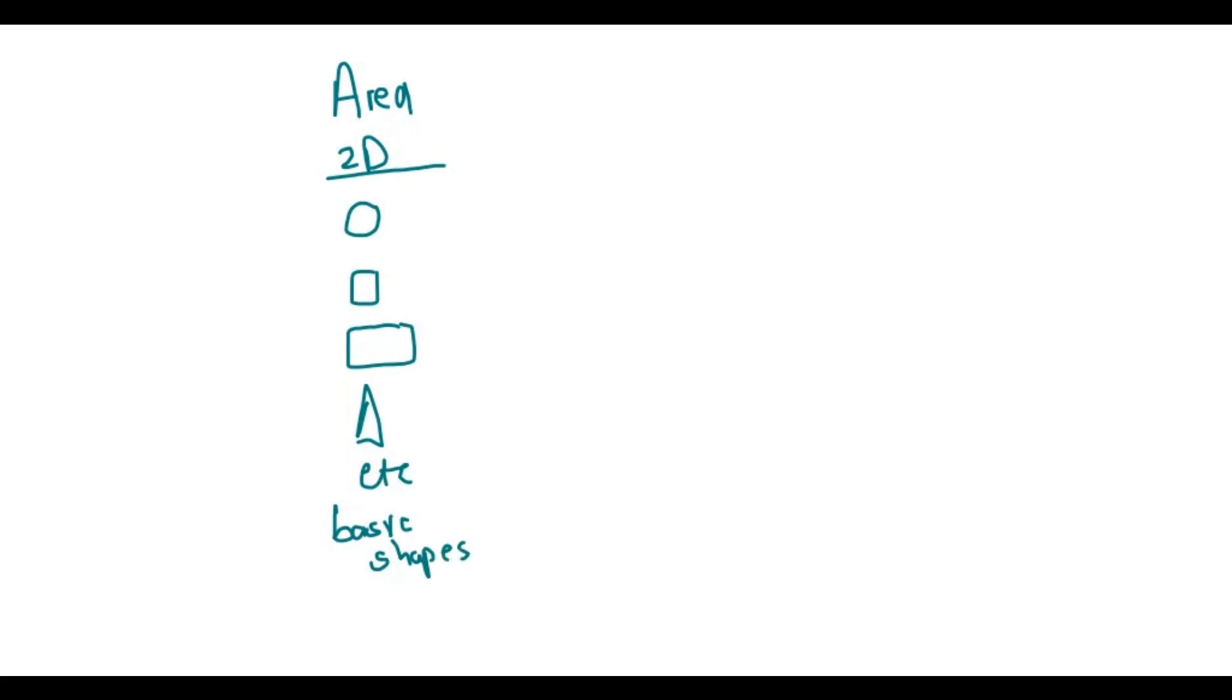We have formulas for all of them: pi r squared, length squared, length times width, and for the triangle, half base times perpendicular height. Okay, those are the formulas for area.